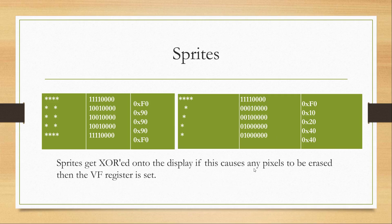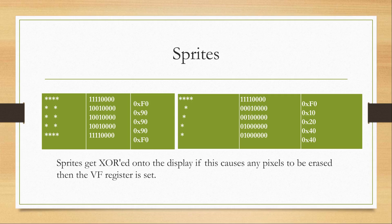Sprites are also XORed onto the screen. If you don't know what an XOR is, you really need to research that because this course has a lot of bitwise logic. The sprites get XORed onto the display, and if this causes any pixels to be erased, then the VF register is set to 1. If nothing is erased, we set the VF register to 0.